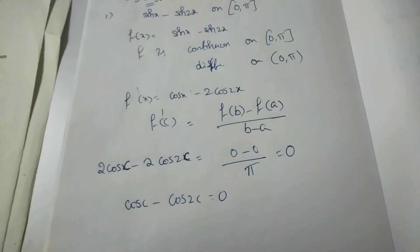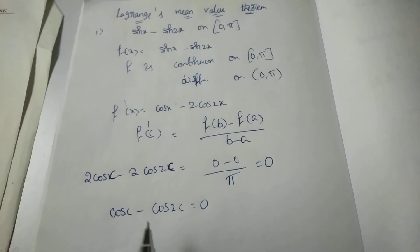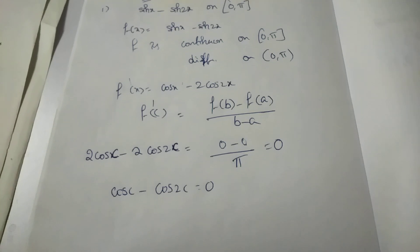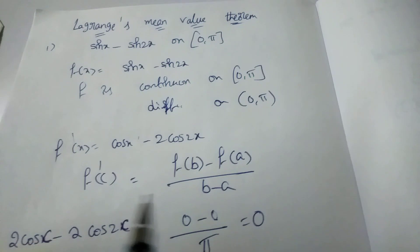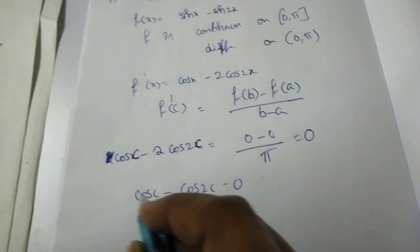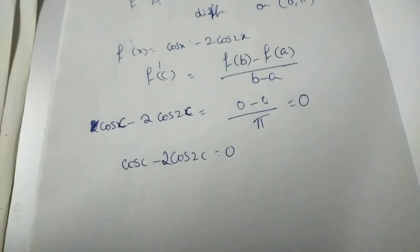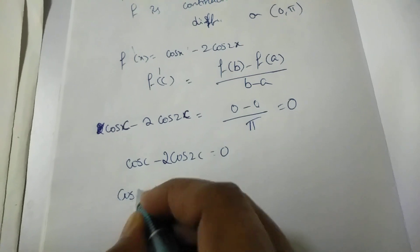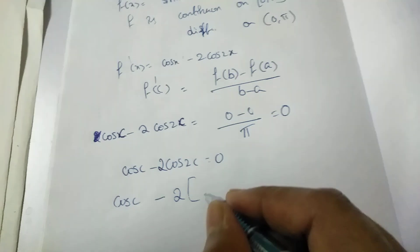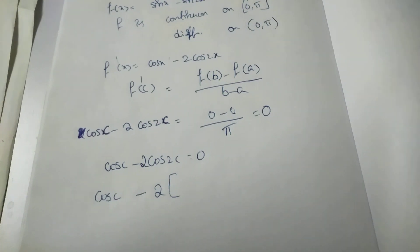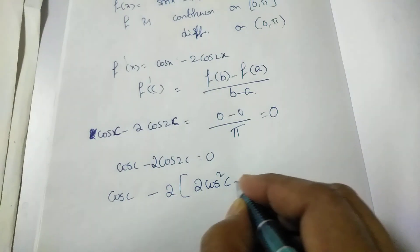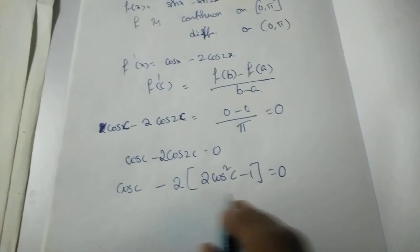Now we must find the value of c. We can apply the cos double angle formula: cos 2c = 2cos²c − 1. Substituting: cos c − 2(2cos²c − 1) = 0, which gives a quadratic equation in terms of cos c.